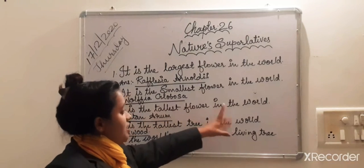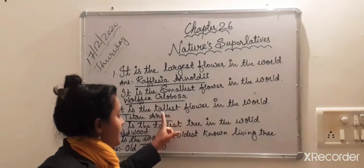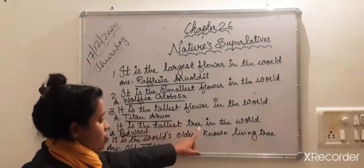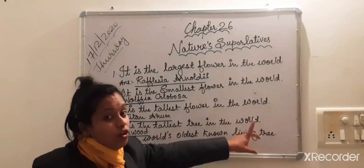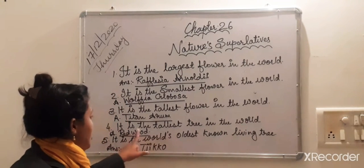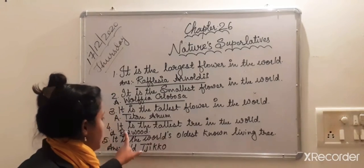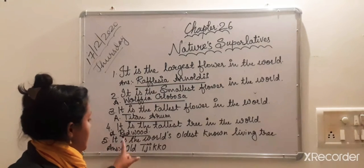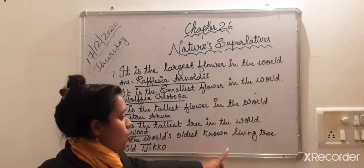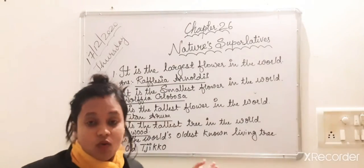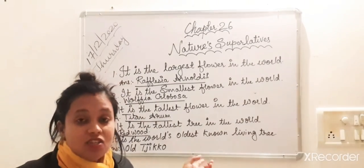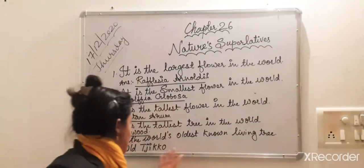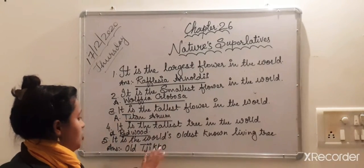The tallest flower in the world is Titan arum. Now it is the tallest tree in the world. We are going to talk about tallest tree - redwood, which is the tallest tree. Now this is the world's oldest known living tree - Old Tjikko. This is the oldest living tree in the world.